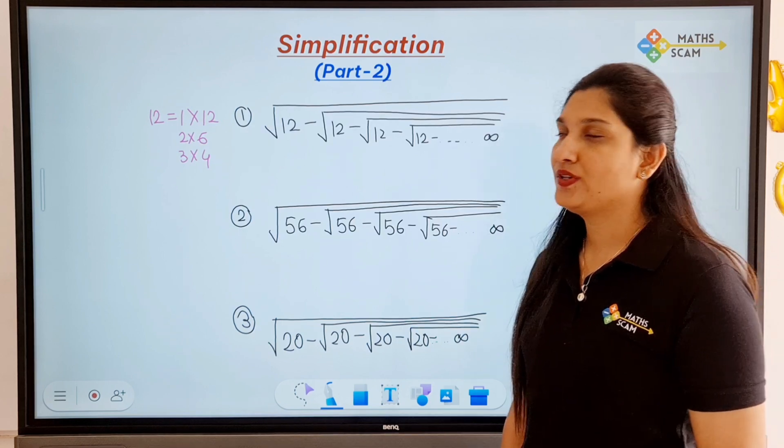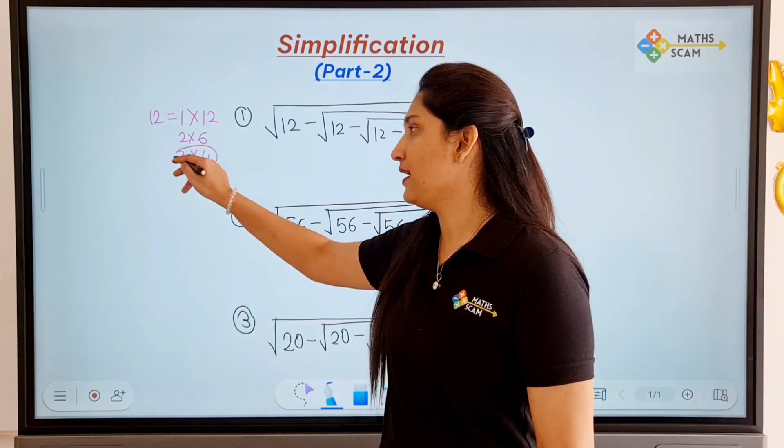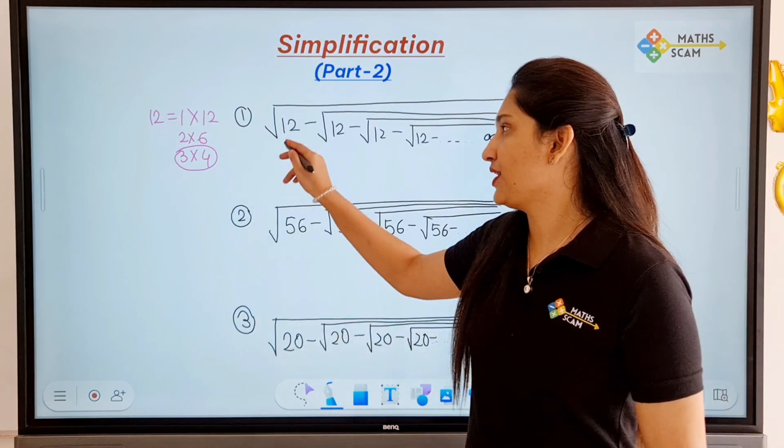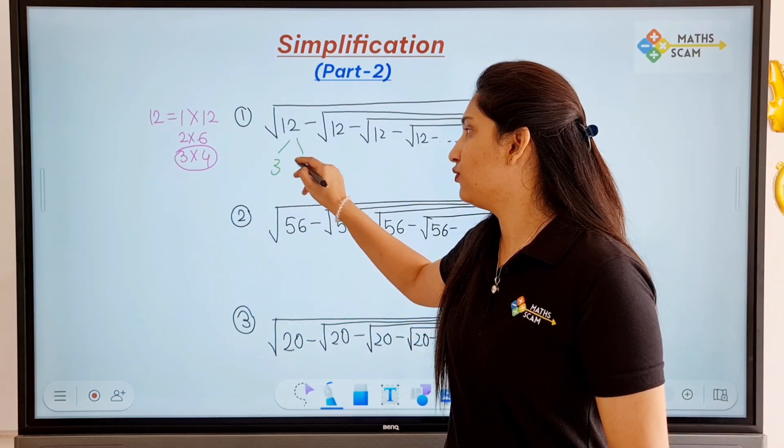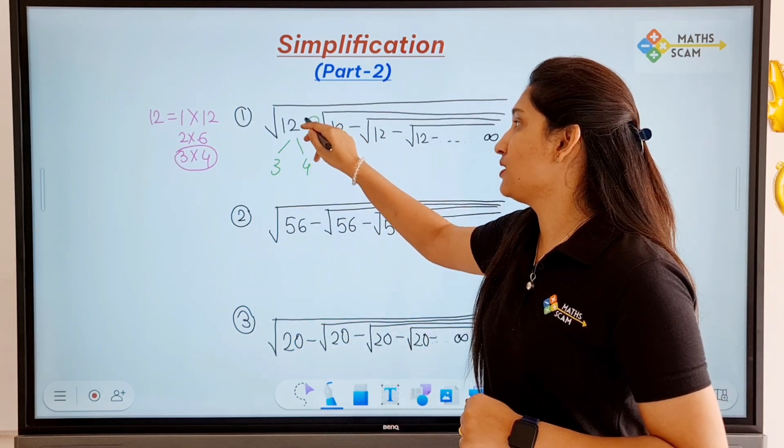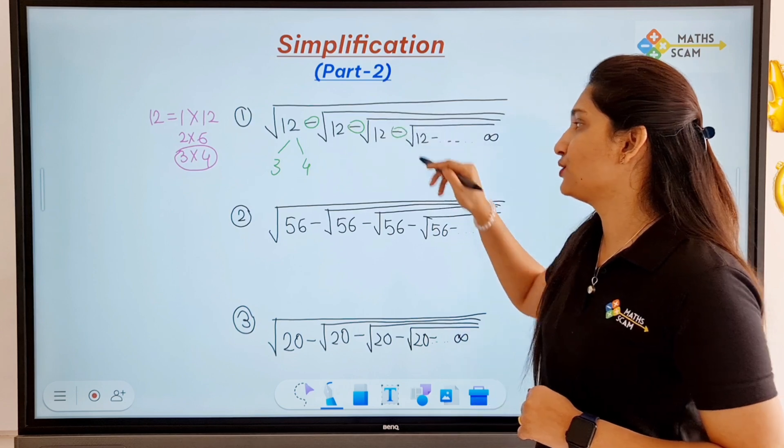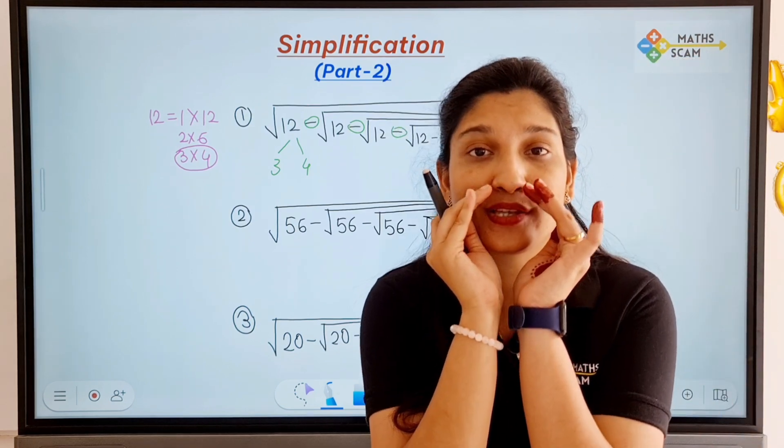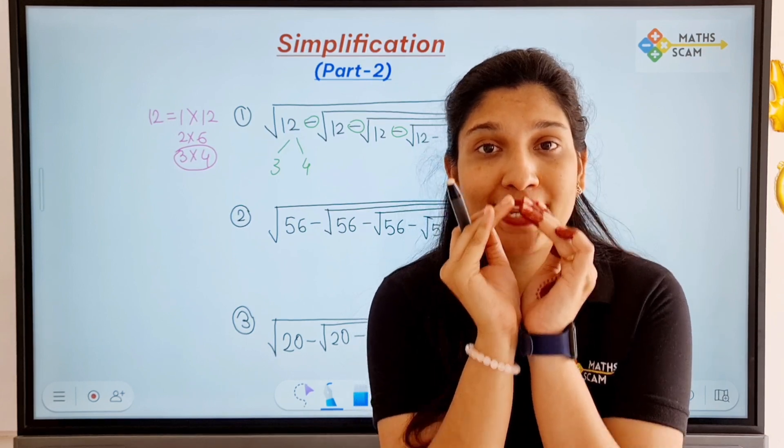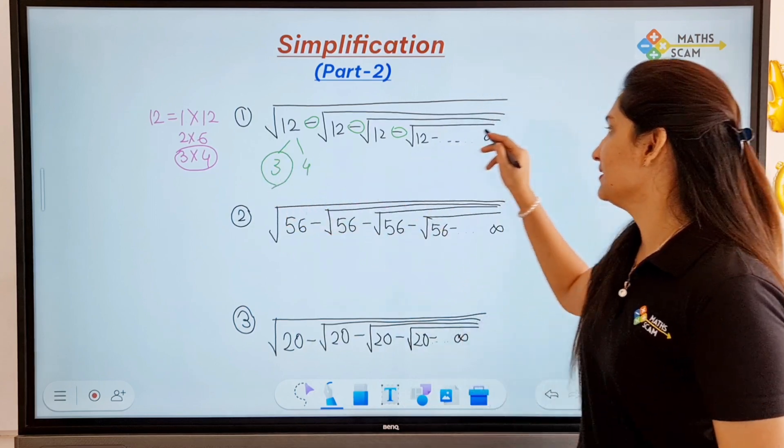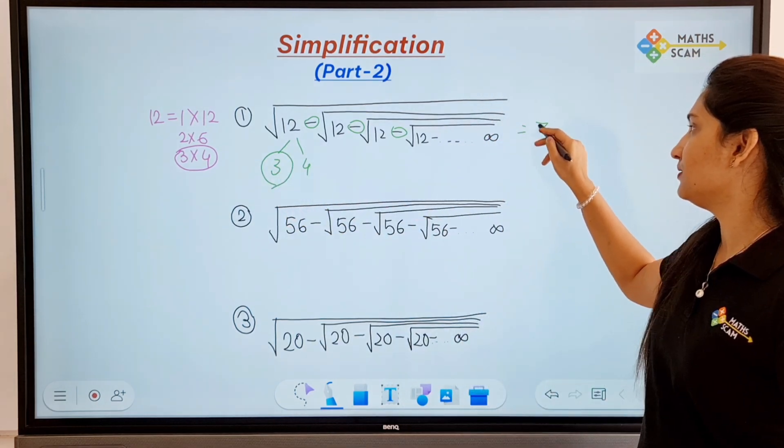That is three and four, right? So what you have to do is write down three and four. Now here the sign is subtraction. Because the sign is subtraction, we have to choose the lowest number, smallest number. So the answer is three.